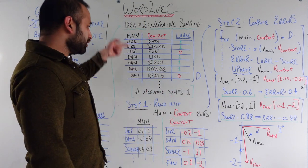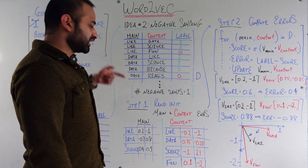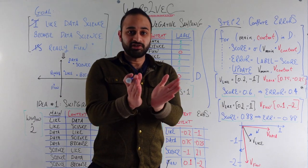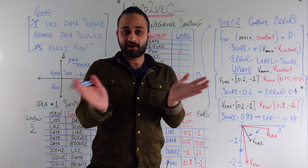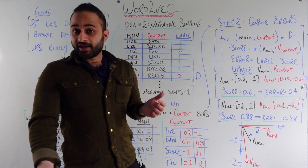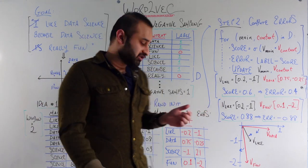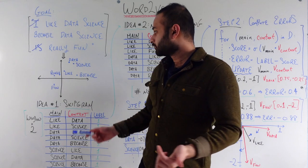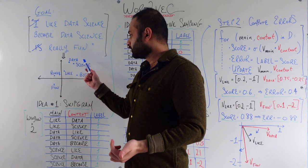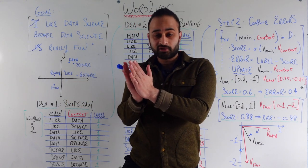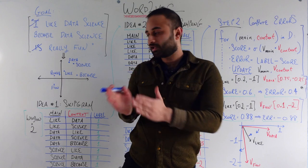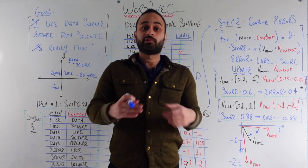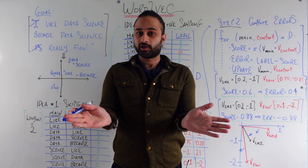And then we can just repeat — going through this dataset as many times as we'd like. Each pass through, we do these steps again and again, so that at the end of the day these main embeddings end up in such a position that words close to each other in the sentence end up literally close to each other in the vector space, and words that are not close end up literally far from each other.